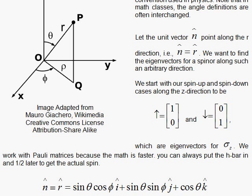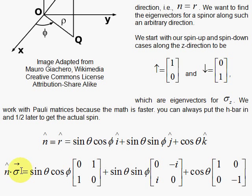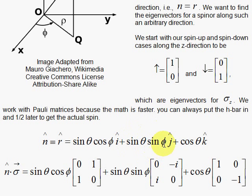So we have the general unit vector, and we dot that with the Pauli spin matrices as a vector. In other words, we set this up as sigma sub x i hat plus sigma sub y j hat plus sigma sub z k hat. When you do the dot product, i dot i, j dot j, and k dot k each give you 1, so you simply have the x component of the unit vector with sigma sub x, the y component with sigma sub y, and the z component with sigma sub z.